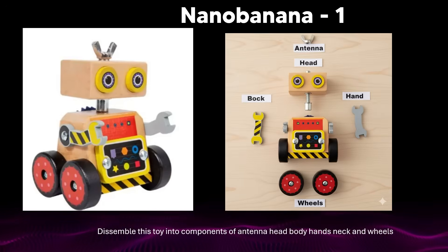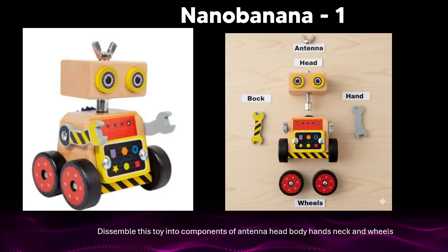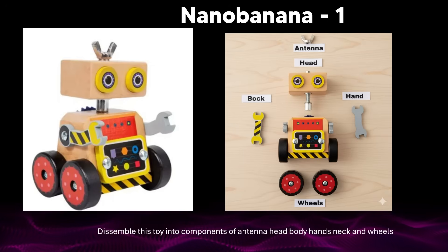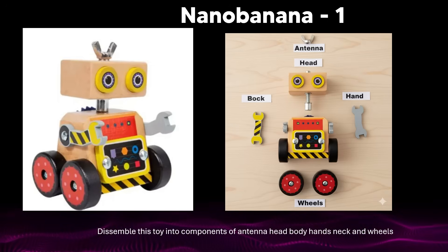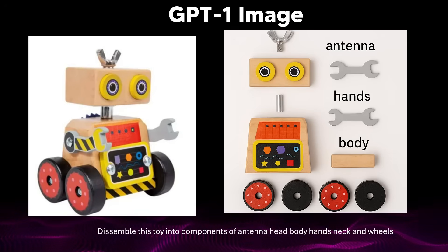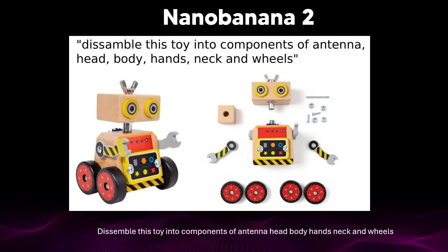Another prompt going around was: disassemble the toy into components — the antenna, the body, the head, the hands, neck, and wheels. Nano Banana 1 doesn't do too bad a job, though some annotations are incorrect. GPT Image 1 does its best but doesn't complete everything. With Nano Banana 2, however, the result is almost flawless — the only questionable thing is one small cube whose location in the robot isn't entirely clear.